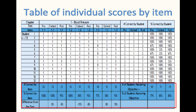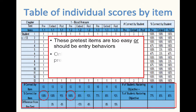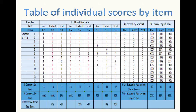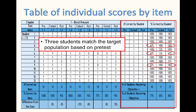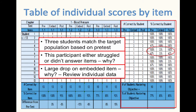Remember we start with the bottom. These pre-test items are too easy or should be entry behaviors. If you notice, only three students or 77% missed the test items. So you should go back and look at the items and look at the demographics and see what the problem is. Next, looking at the right side, three students seem to match the target population based on the pre-test numbers. This participant either struggled or didn't answer some of the items — you want to see if you can figure out why. There's also a large drop on the embedded item for two individuals; go back and look at the individual data and see if you can discover what happened. Perhaps they forgot to answer these questions.